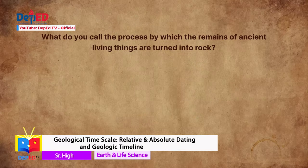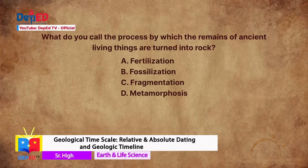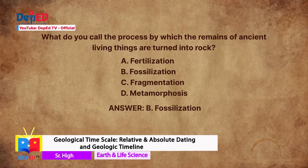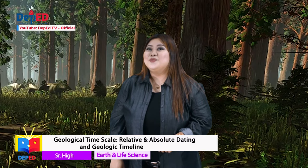What do you call the process by which the remains of ancient living things are turned into rock? A. Fertilization. B. Fossilization. C. Fragmentation. D. Metamorphosis. This one is easy, right? The correct answer is Fossilization, letter B. Phew! What a relief!